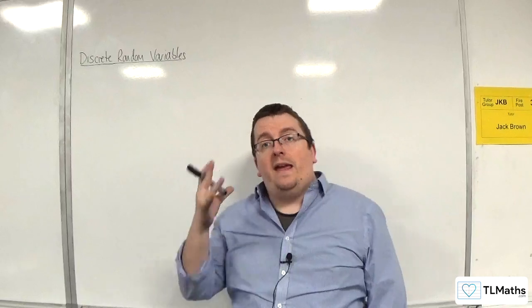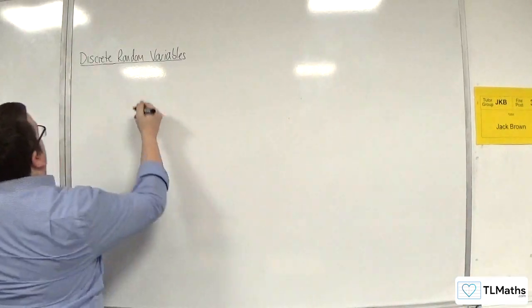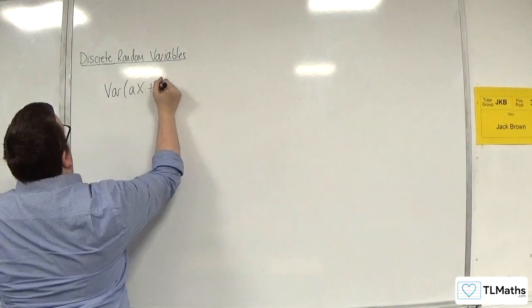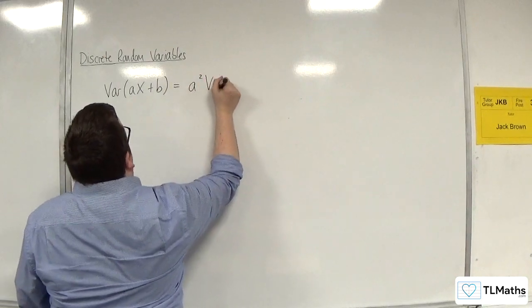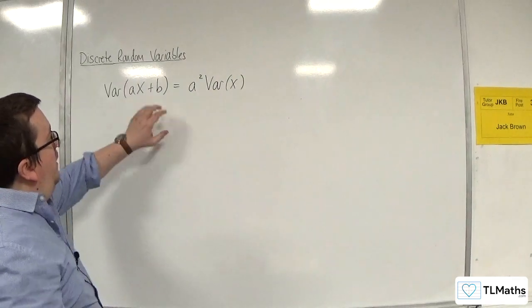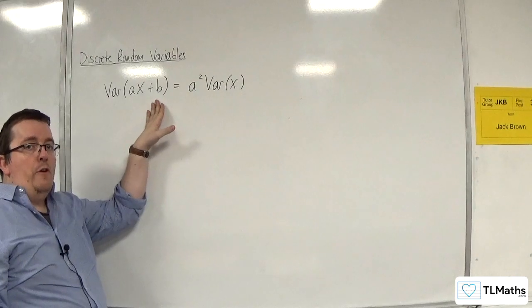So in the previous video we explored var of x and we discovered that if you have the variance of ax plus b then this is actually a squared of var of x. So the plus b that's inside there doesn't make any difference to the variance.